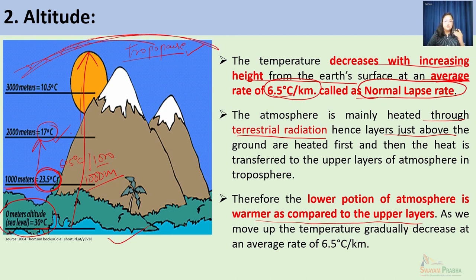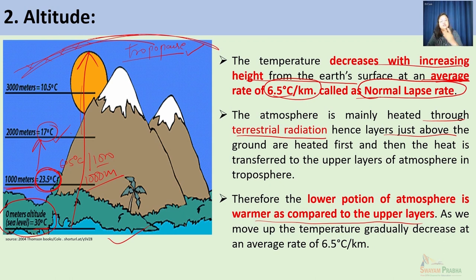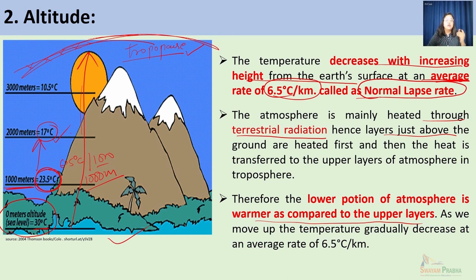The decrease of temperature with increasing height is more over the equatorial areas because the height of the tropopause is greater — around 12 to 14 kilometers over equatorial areas. Over polar areas, the tropopause is just 7 to 10 kilometers high. So the decrease of temperature with increasing height is comparatively less over polar areas because the vertical extent of air over equatorial areas is greater. The impact of altitude is quite profound in the distribution of temperature on Earth.